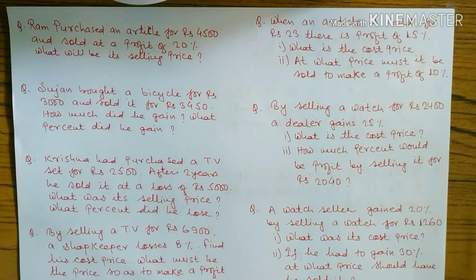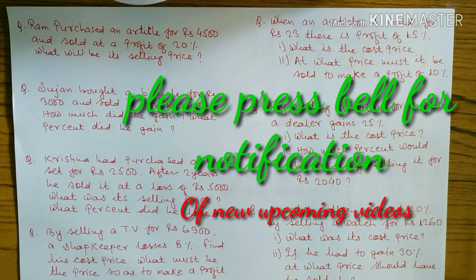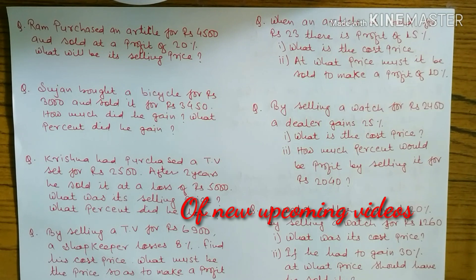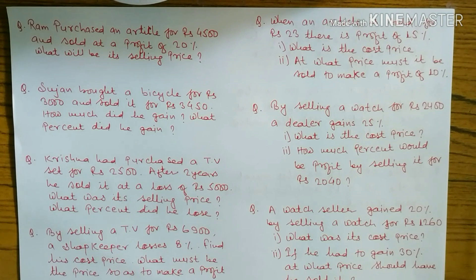Question number one: Ram purchased an article for rupees 4,500 and sold at a profit of 20 percent. What is the selling price? We have to find out the selling price where cost price is given. Cost price is 4,500 and he sold it at a profit of 20 percent.